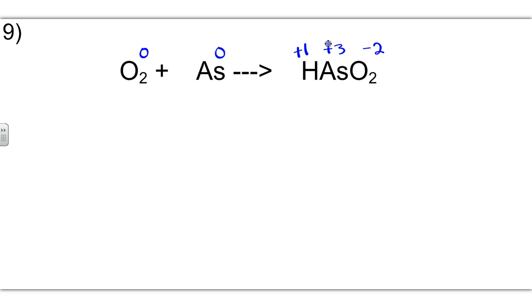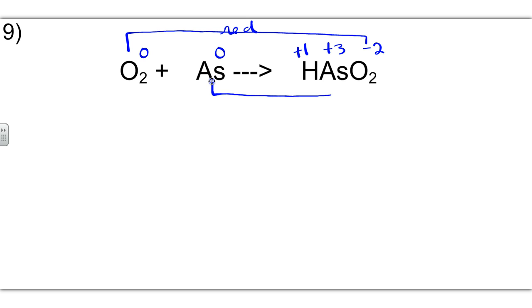Arsenic is a plus 3. Oxygen undergoes reduction, and arsenic undergoes oxidation.